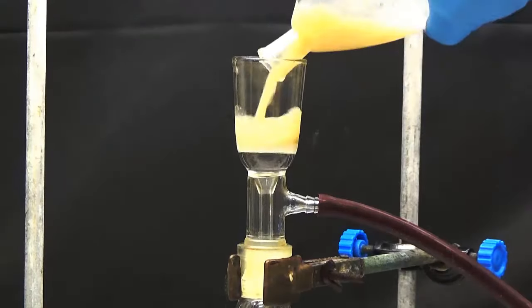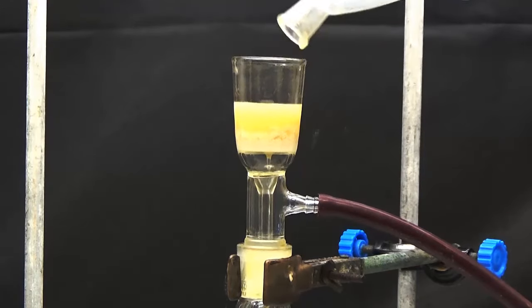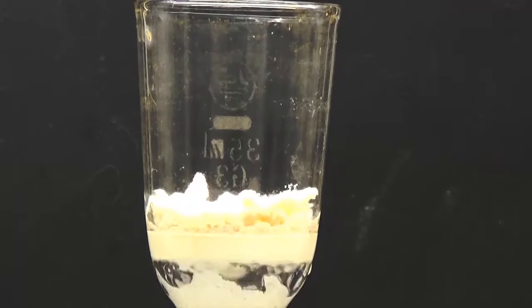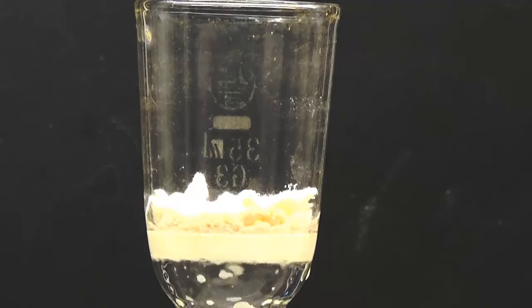Collect the amygdalin by suction filter. Repeat the extraction with 10 milliliters of ethanol and precipitation with 5 milliliters of ether until no amygdalin precipitates.